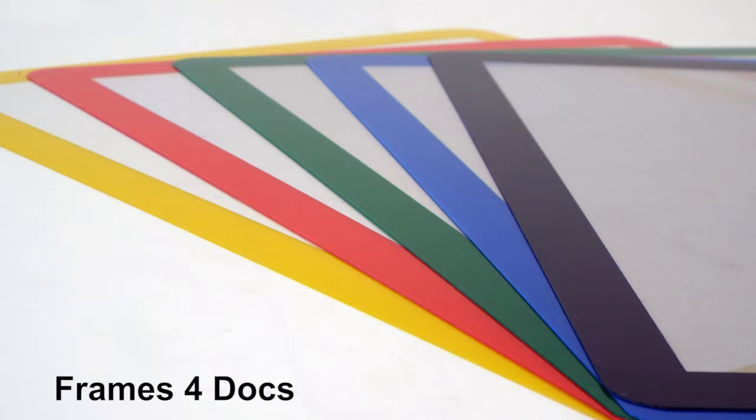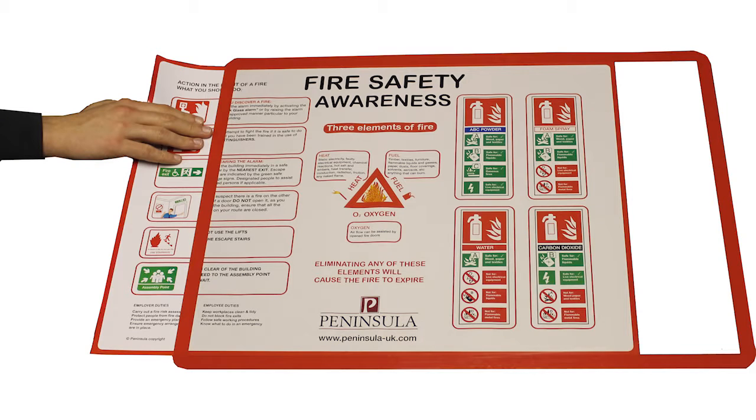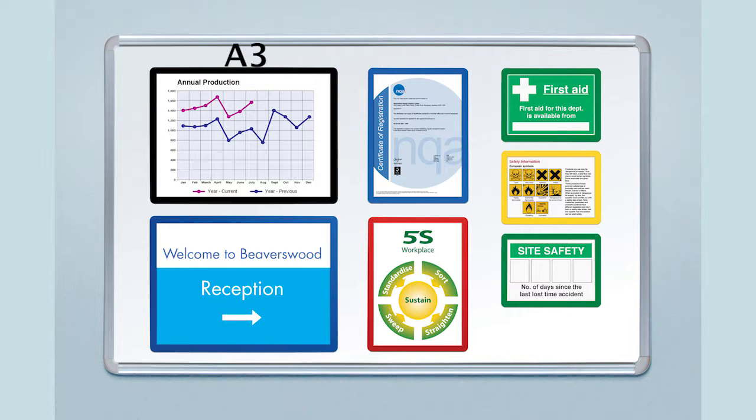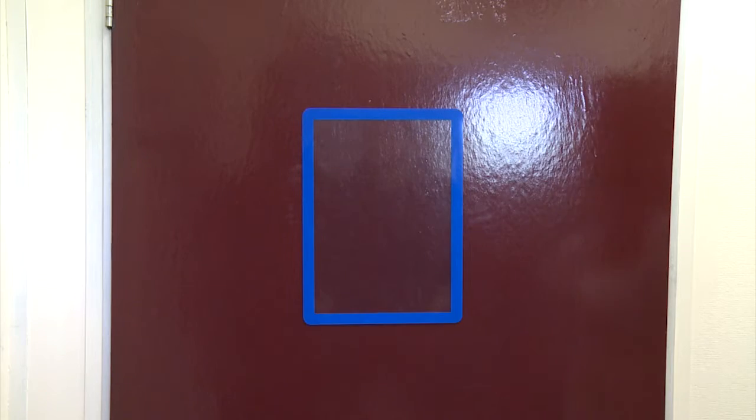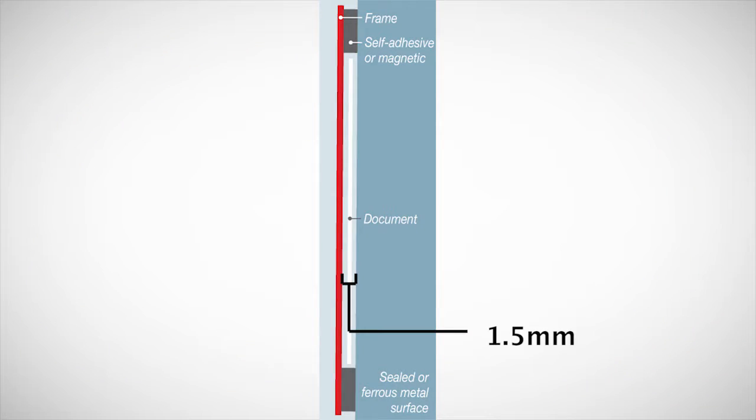Frames for Docs are a unique range of color-coded frames designed to make your messages come to life. They're available in A2, which are ideal for health and safety posters, A3, A4, and A5 paper sizes, and allow you to frame any message, sign, or chart in seconds that has a thickness of up to 1.5mm.